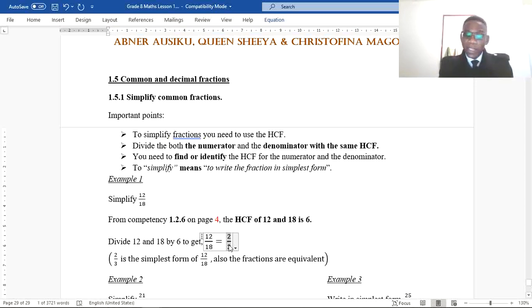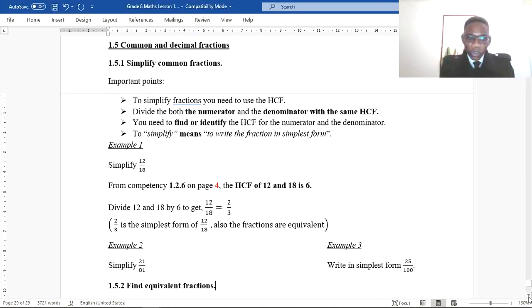Let me see if you have picked up something. What I want you to do is simplify these two fractions: 21 over 81 and the other one is 25 over 100. Very important: make sure that you identify the highest common factor, otherwise you are going to take more time.